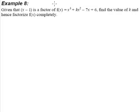Let us take a look at example 8. Given that x minus 1 is a factor of f(x) equals x cubed plus kx squared minus 7x plus 6, find the value of k and hence factorize f(x) completely.